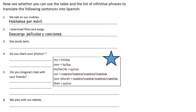Then we've got: she sends texts. We know that to send text is mandar SMS, and mandar is our verb — it's an AR verb. We need to take that AR off and check our ending for she, which is an A. So you should have manda SMS — again, no need to make that plural.